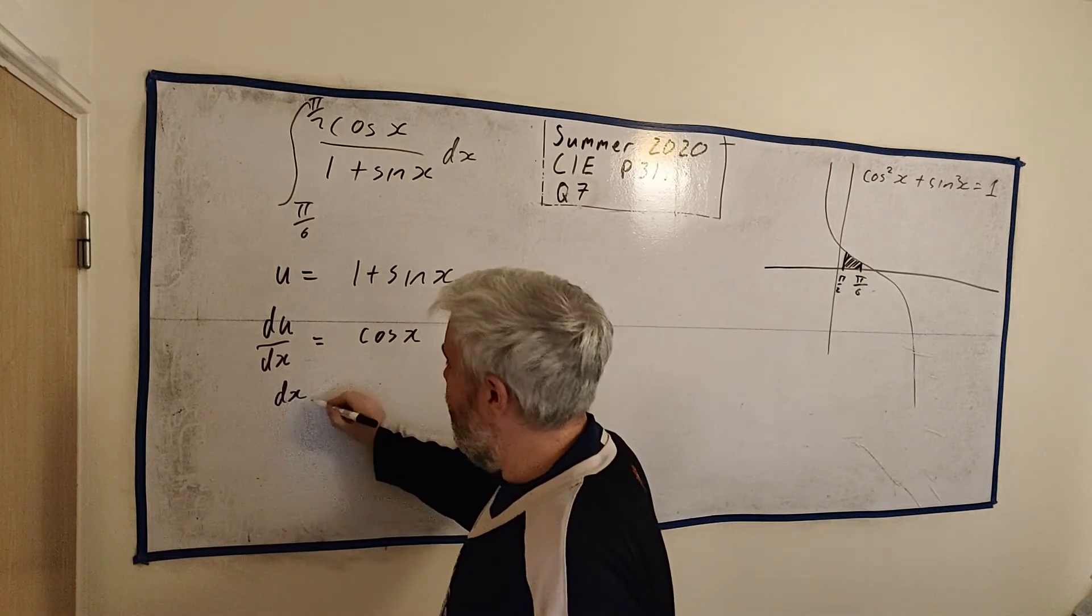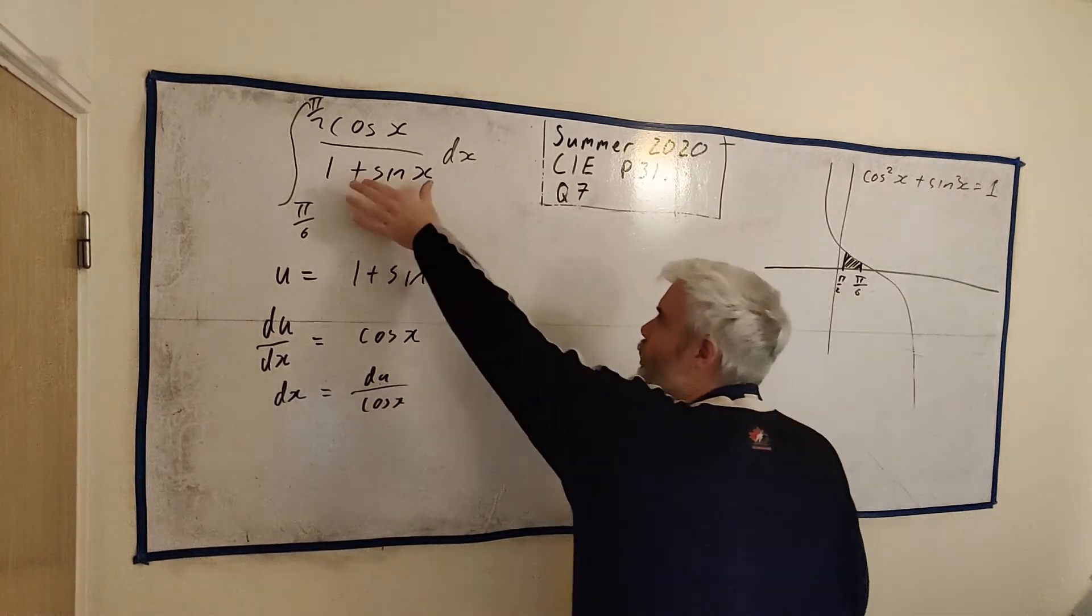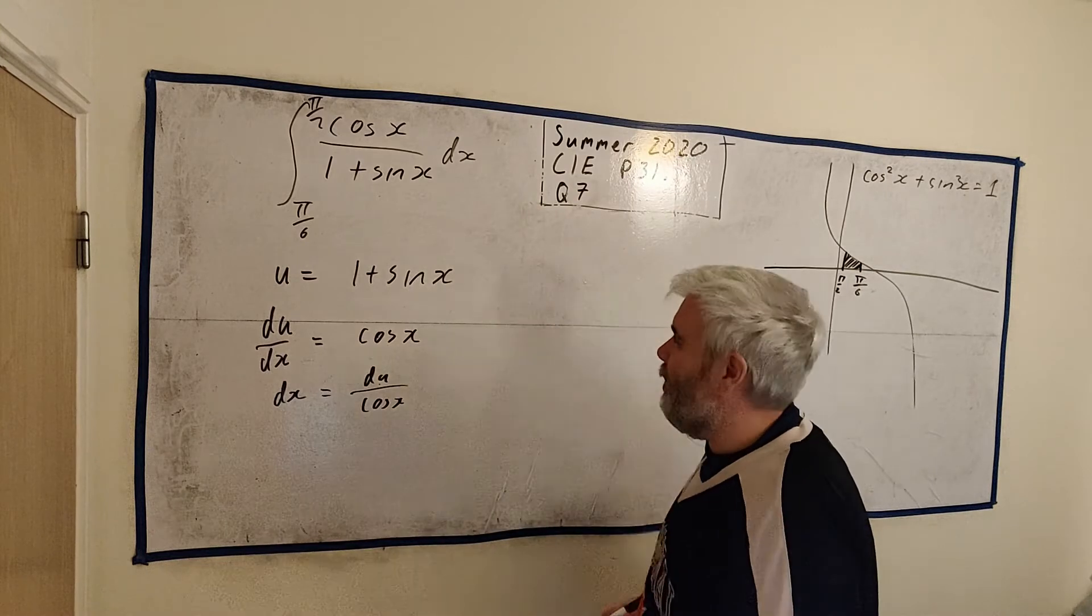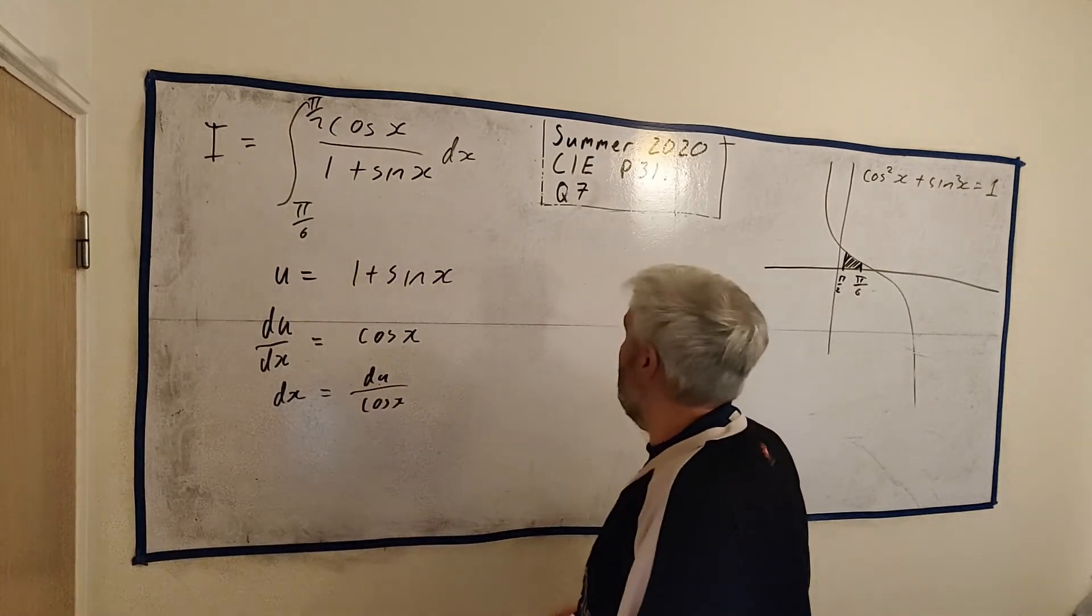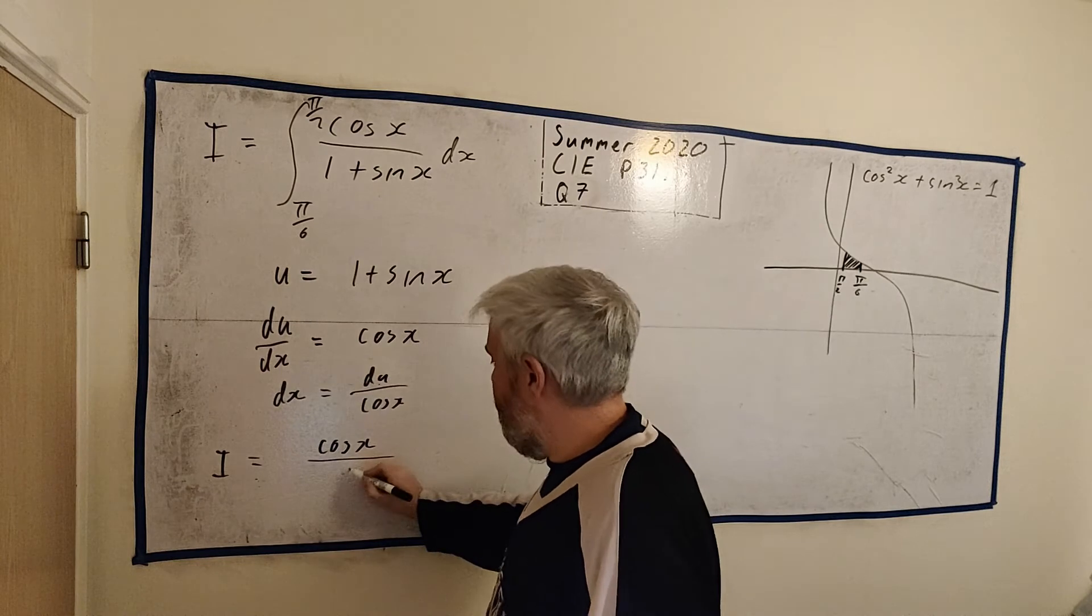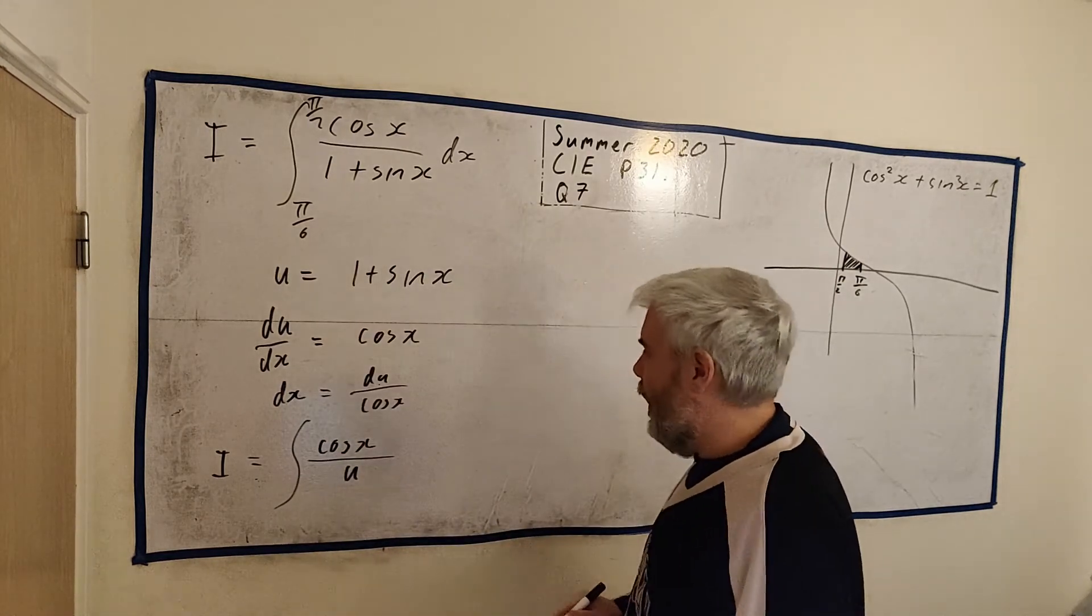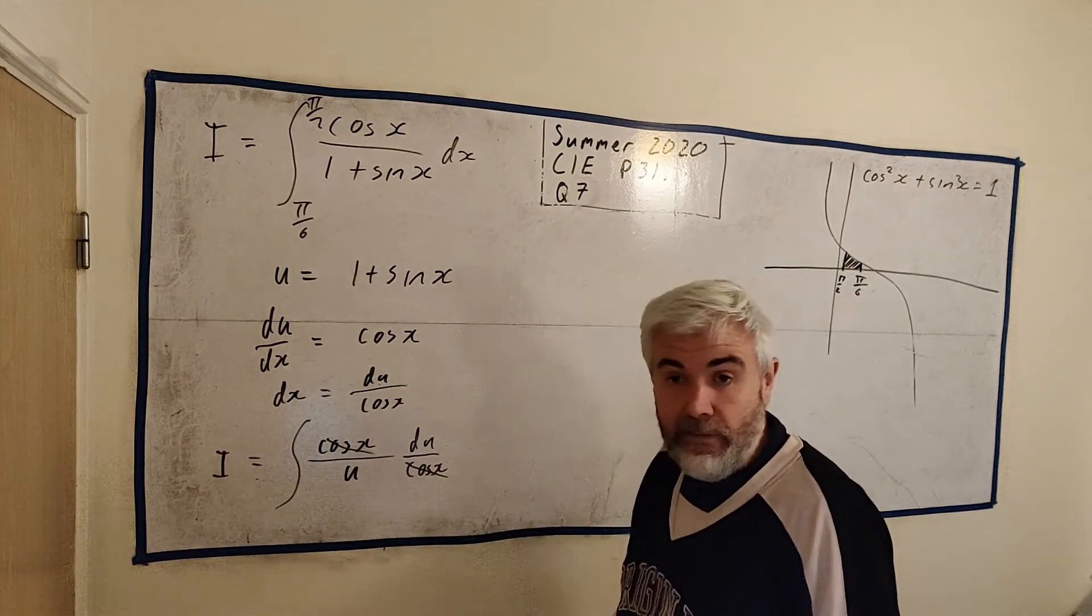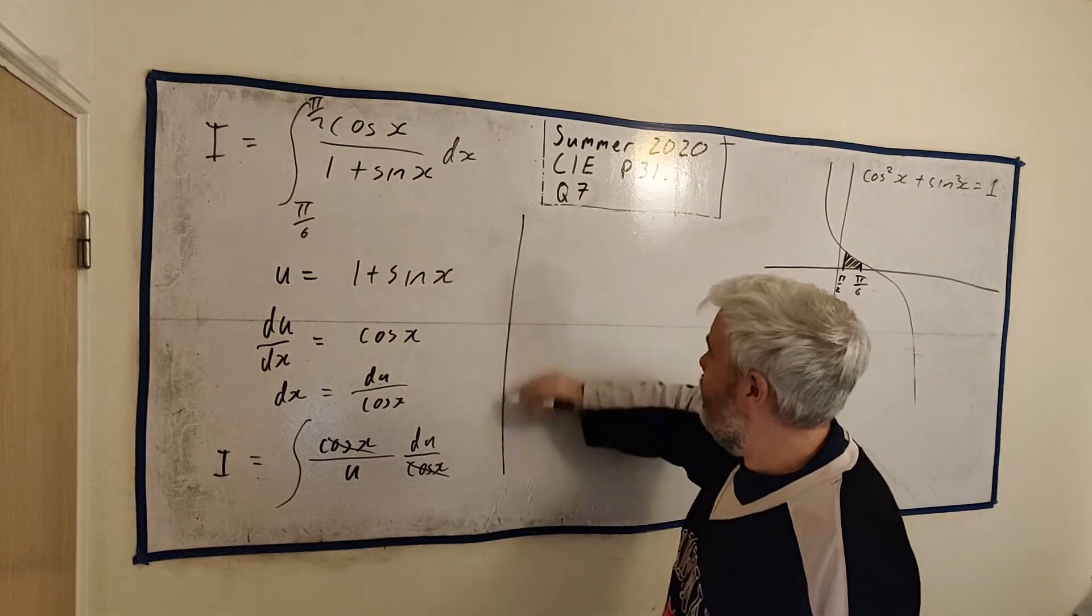I rearrange this because I really want to know what dx is equal. dx is equal to du divided by cos(x). So I rewrite this one. I'll leave the limits off because the limits change. So let's call this guy I, just to save me writing it again. So I is equal to cos(x). I can't replace that with anything. This bottom row I've replaced with u. I'll leave an integral in. And dx, I can replace dx. That becomes du divided by cos(x). And look what happens. They cancel. And that's what I wanted.